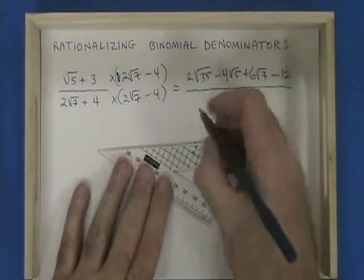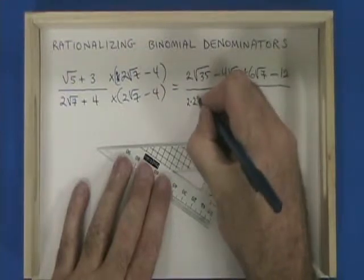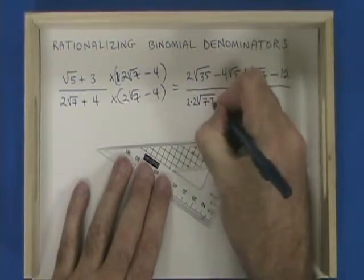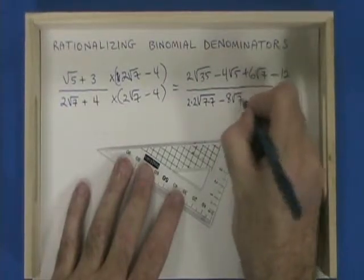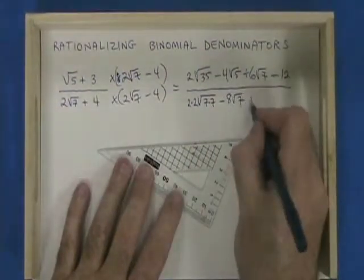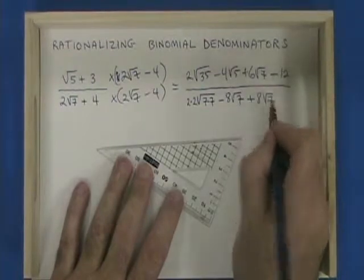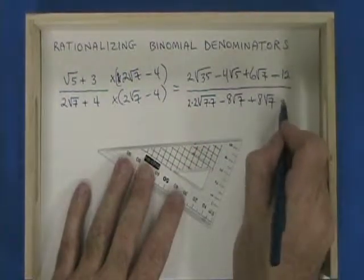2 root 7 times 2 root 7 is 2 times 2, the square root of 7 times 7. 2 root 7 times negative 4 is minus 8 root 7. 4 times 2 root 7 is plus 8 root 7. And 4 times negative 4 is minus 16.